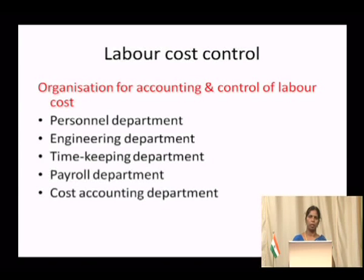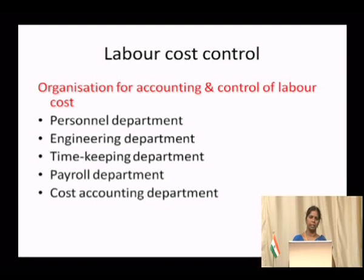Those five departments are: first, the personnel department. The personnel department is concerned with activities from recruitment till retirement — whatever activities relate to labor, the personnel department will take care of that. For example, selecting the right person for the right job — the work starts from selection, absorbing people into the department, giving them training, and placements — everything will be looked after by the personnel department.